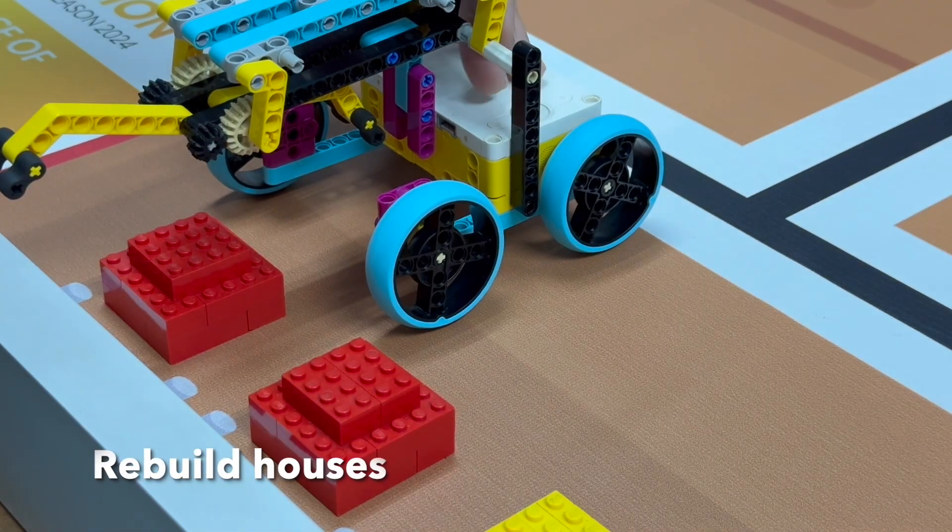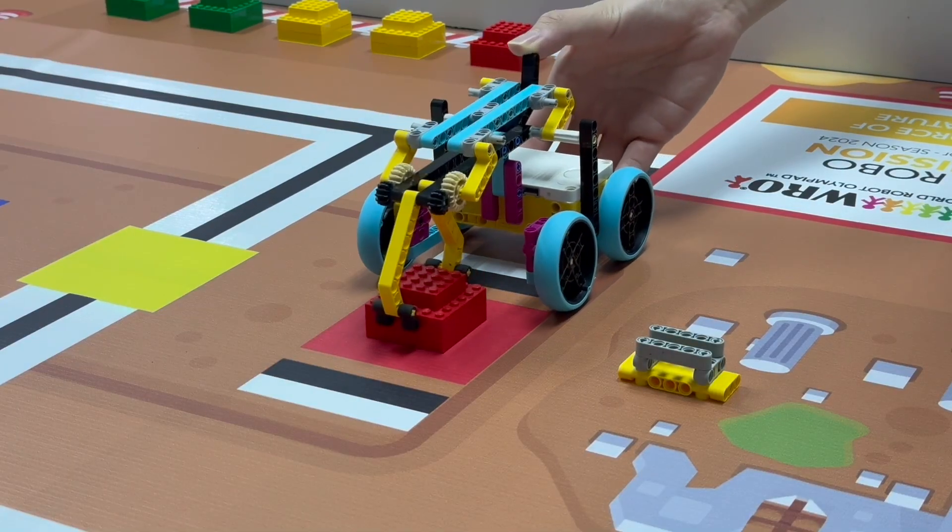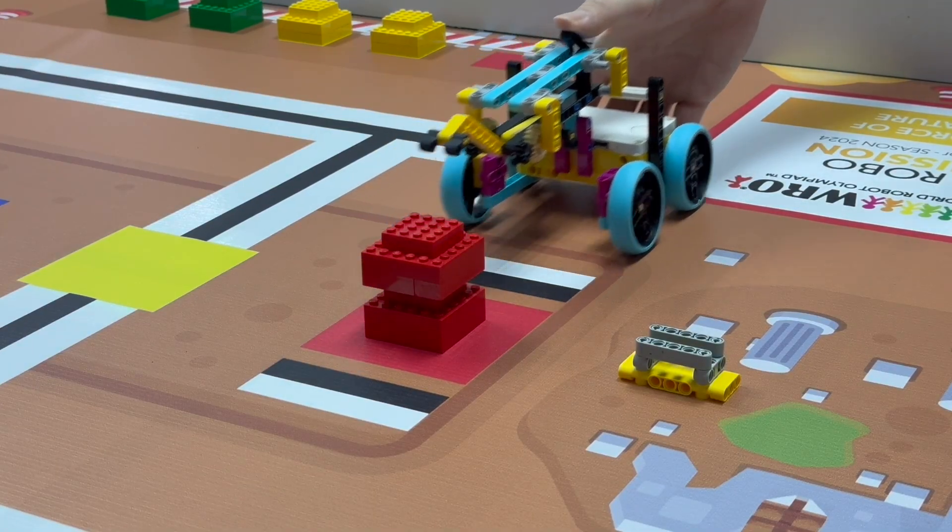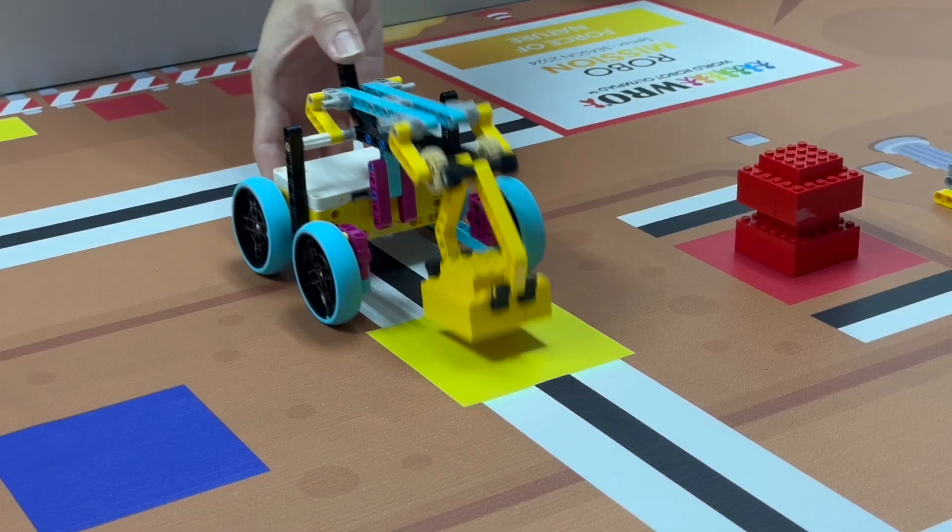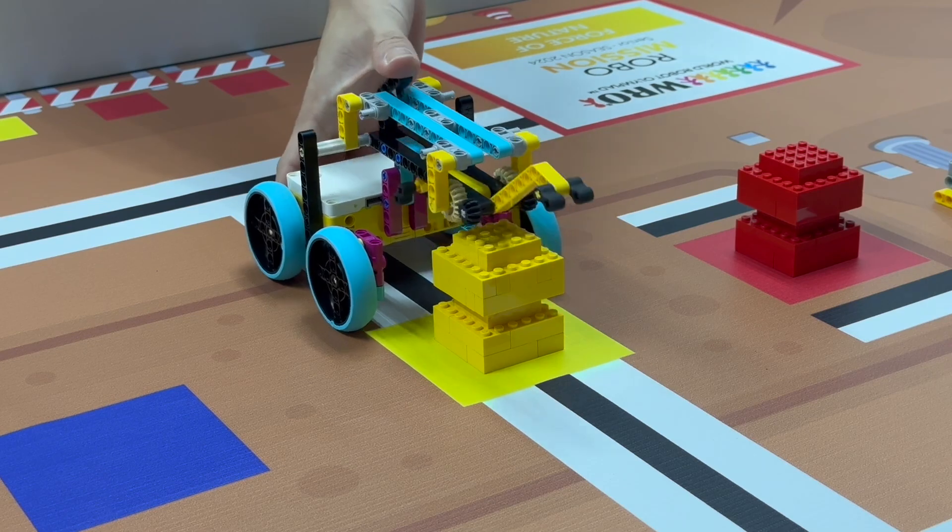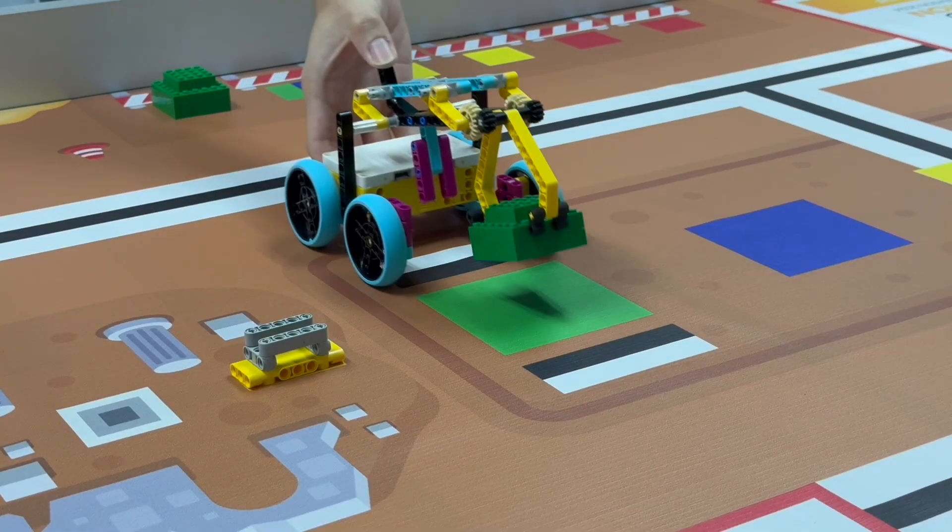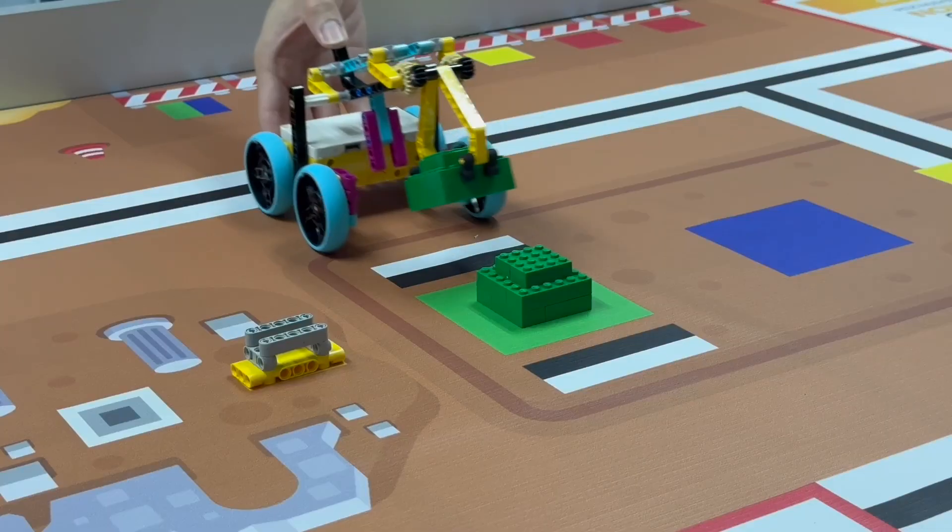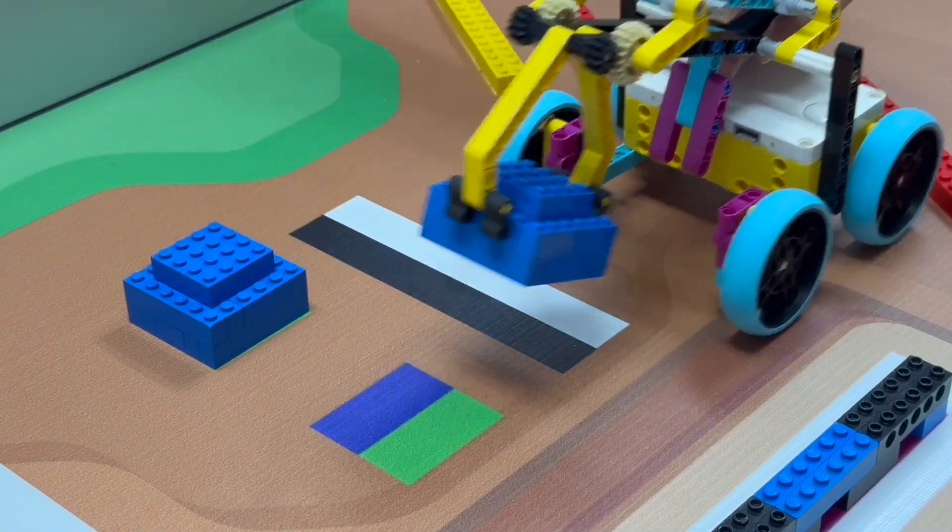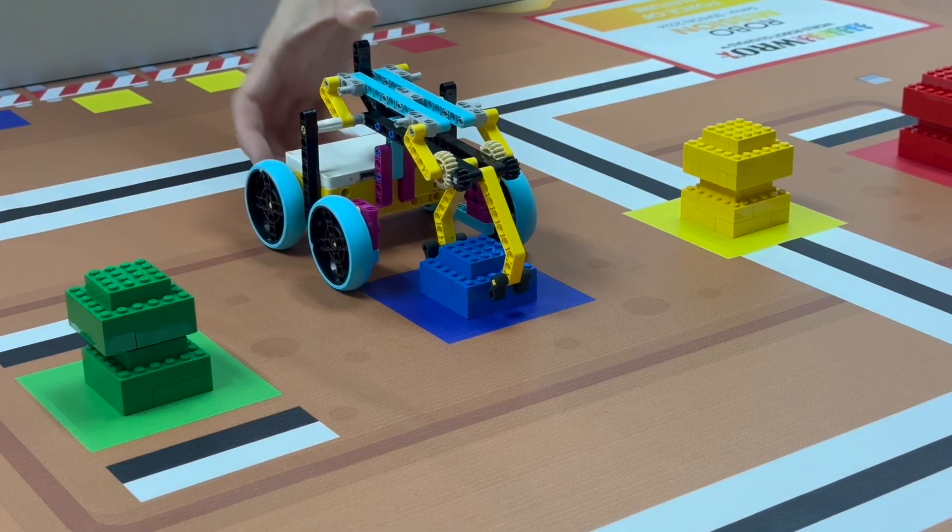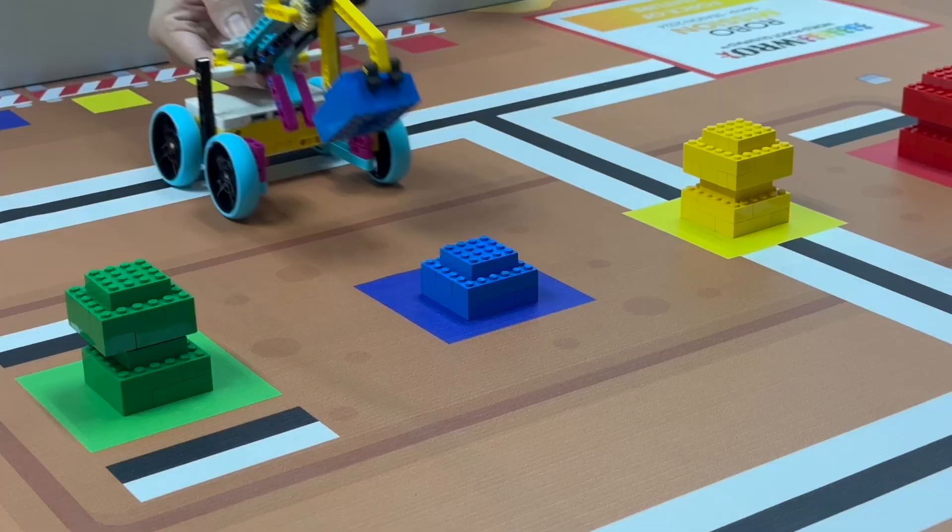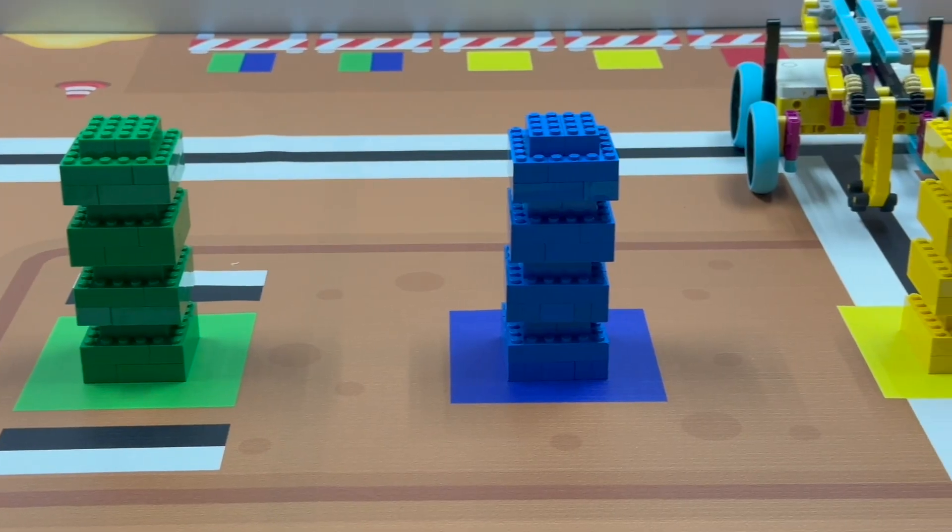The robot should help rebuild houses, one in each color: red, yellow, green, and blue. Every house can have four floors.